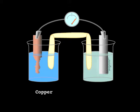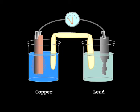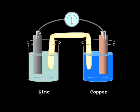When they used copper and silver, the copper strip dissolved and silver was deposited on the silver electrode. In a copper-lead setup, the lead strip was eaten away, with copper deposited on the copper electrode.